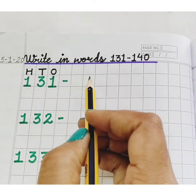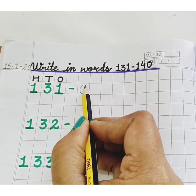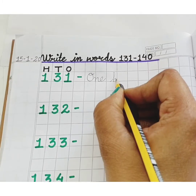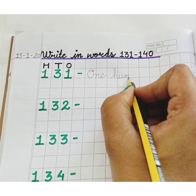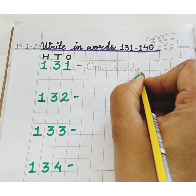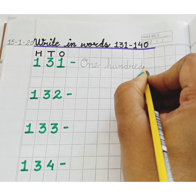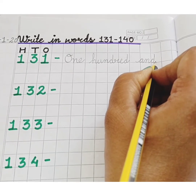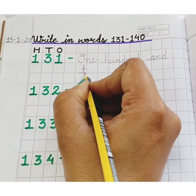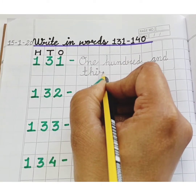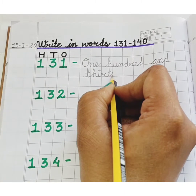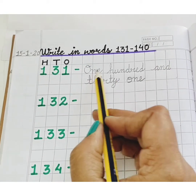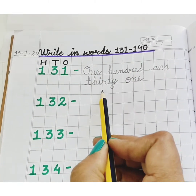131. We will start from capital letter O, N, E — 1. H, U, N, D, R, E, D — 100. A, N, D — and T, H, I, R, T, Y — 30. O, N, E — 1. One hundred and thirty-one.